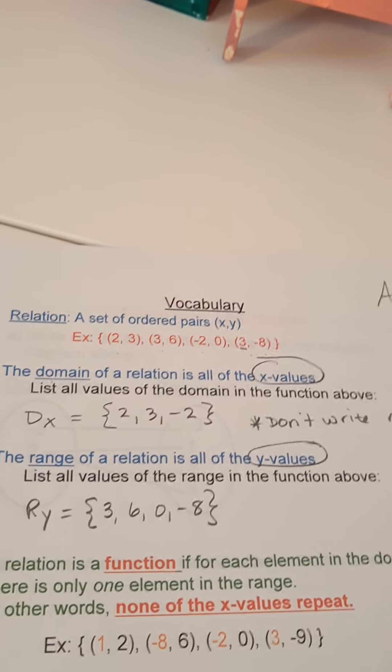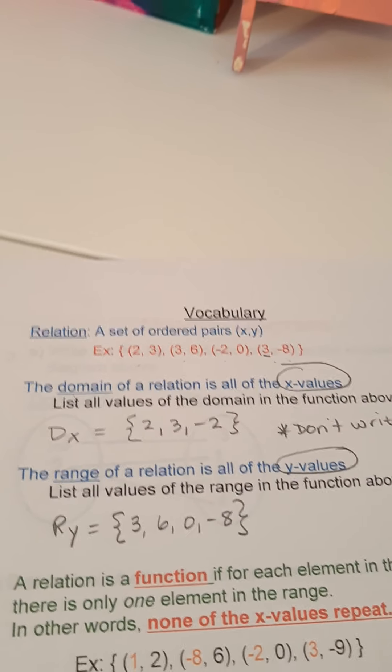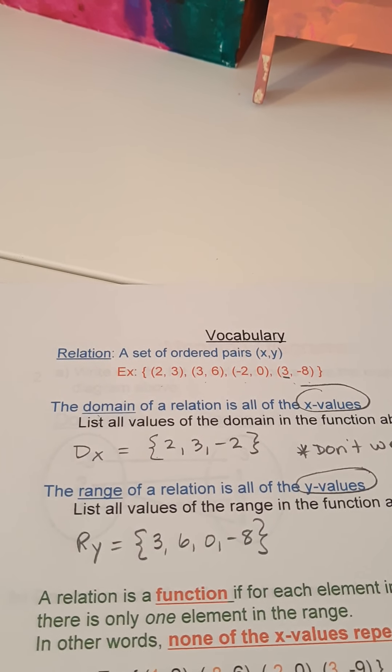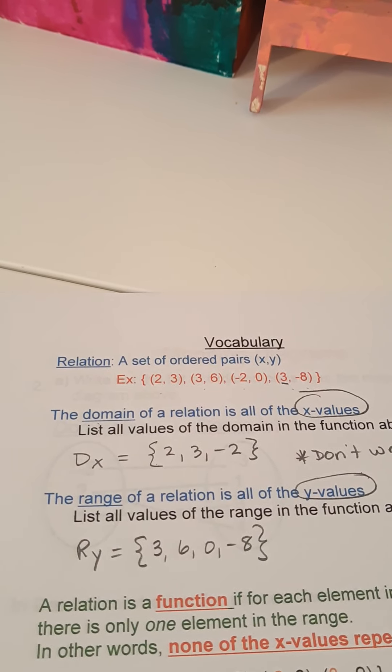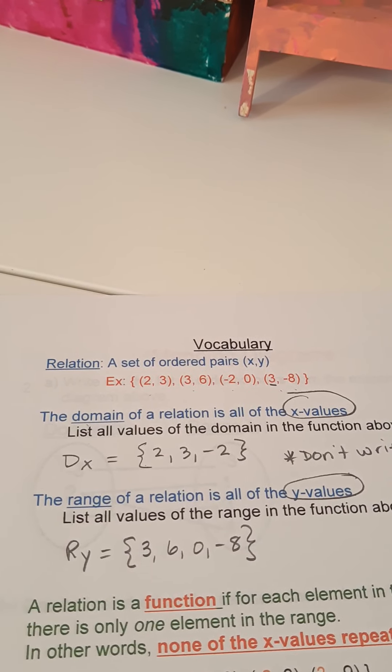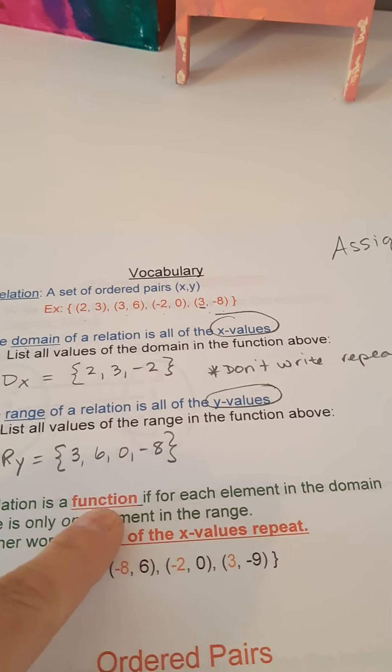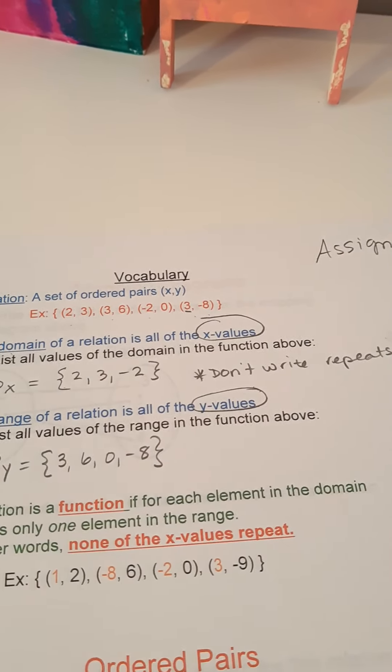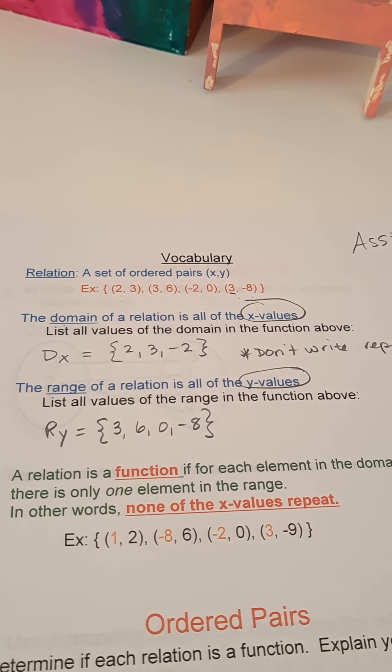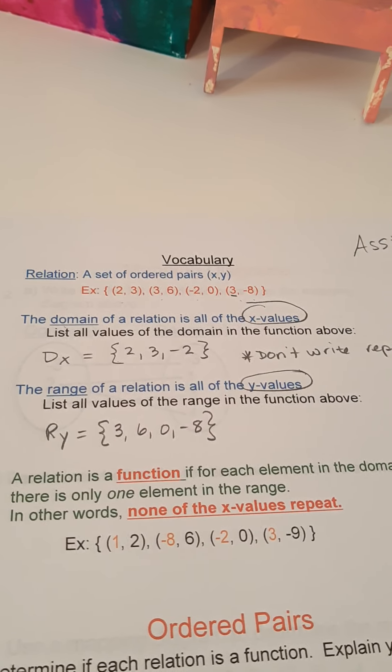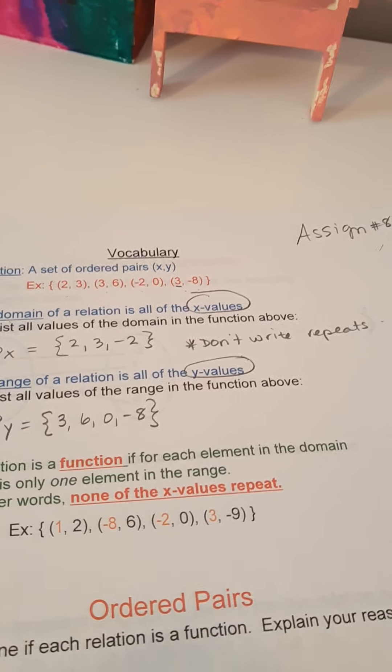Guys, that's literally it. We want to be able to know that the x's are known to be called the domain and the y's are known to be called the range. All right, so then each relation is a function for each element in the domain. There is only one element in the range. So the easiest way to explain that, no x values repeat.